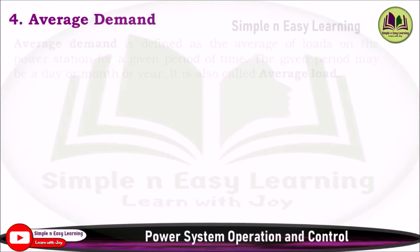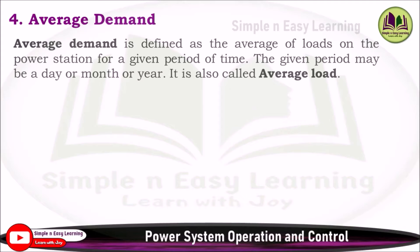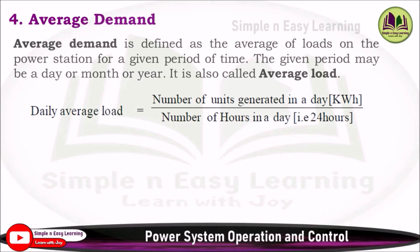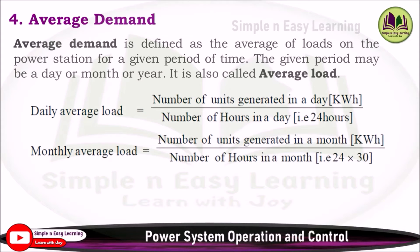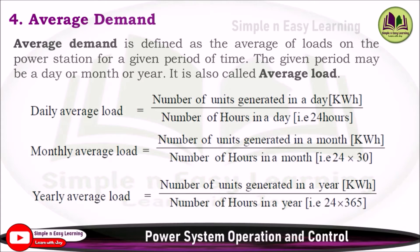Fourth: average demand, also called average load. It is defined as the average of loads on the power station for a given period of time — a day, month, or year. Daily average load = units generated in a day / 24 hours. Monthly average load = units generated in a month / (24×30) hours. Yearly average load = units generated in a year / number of hours in the year.